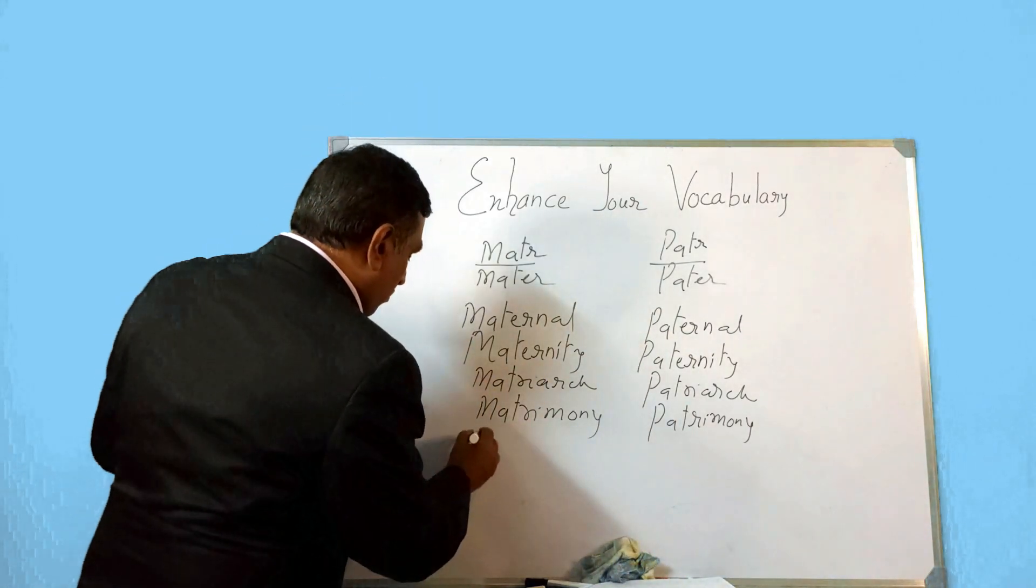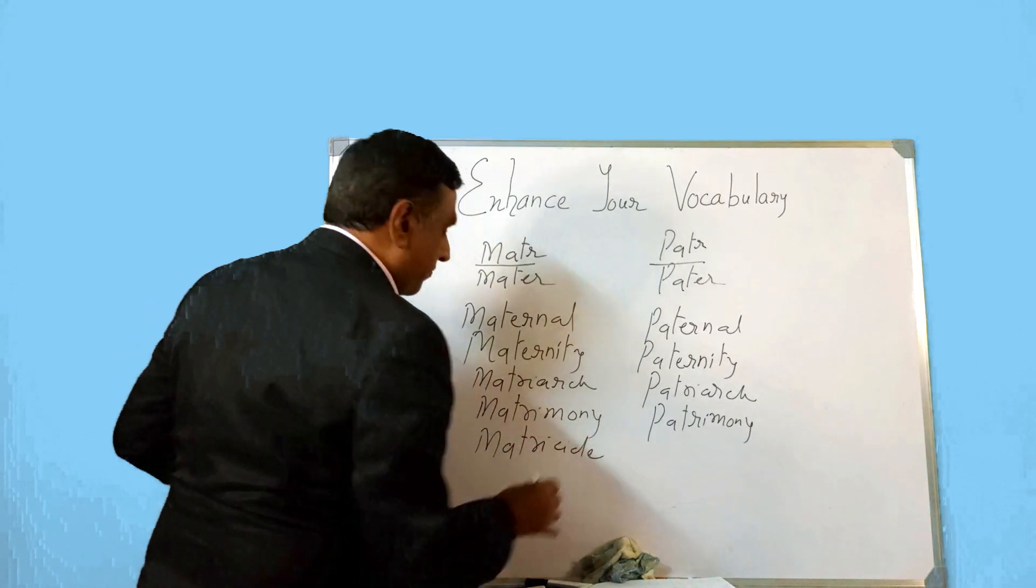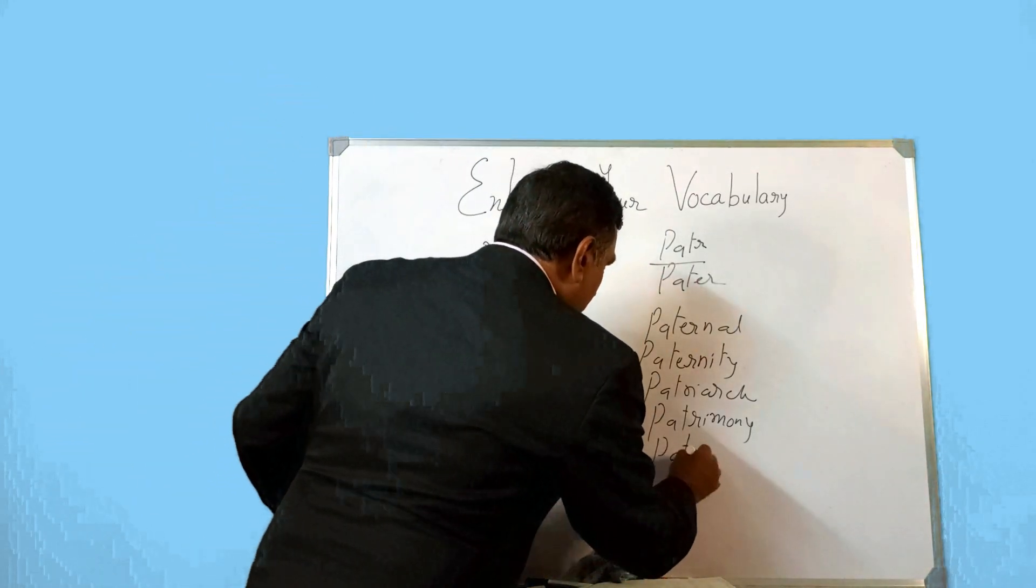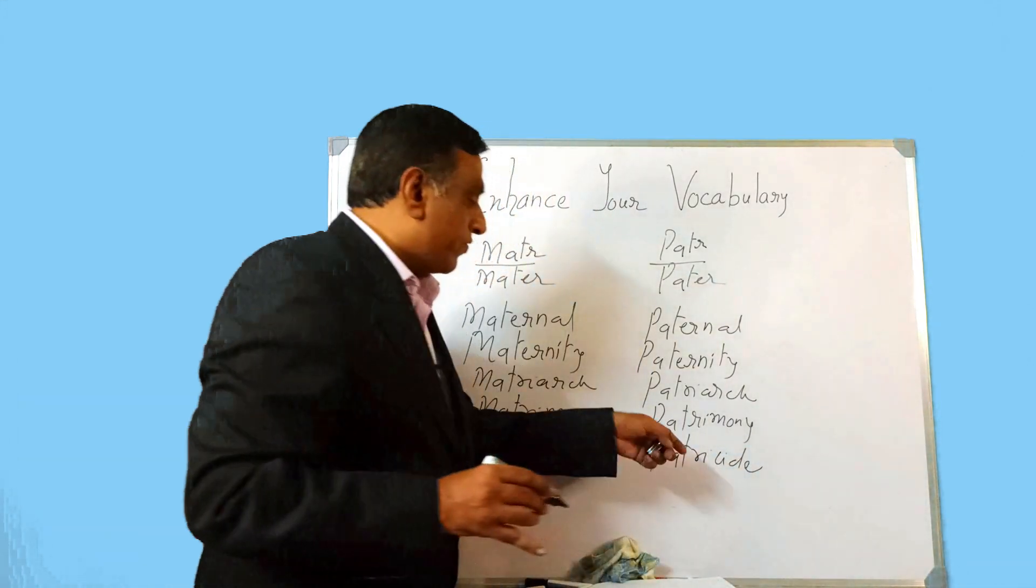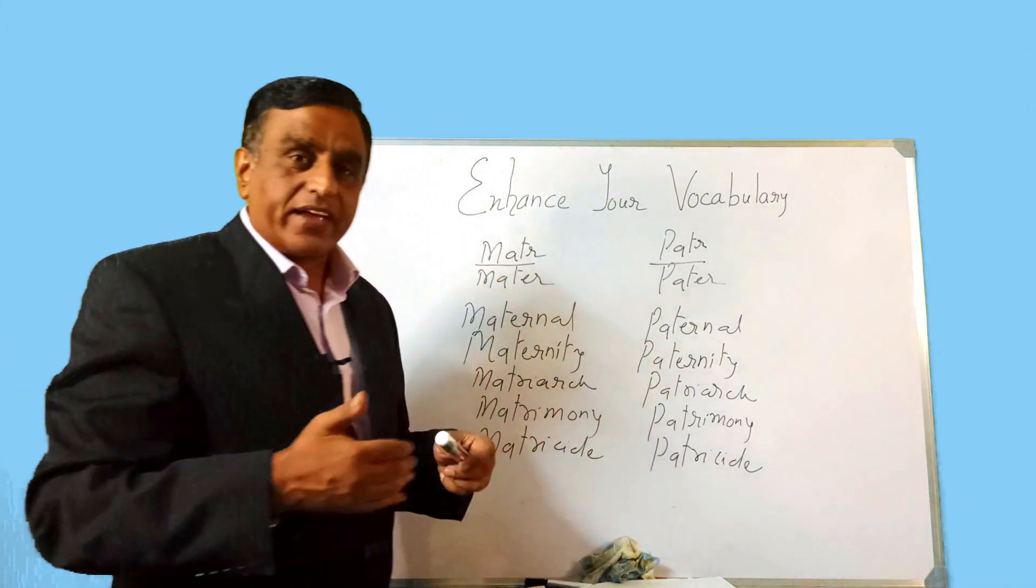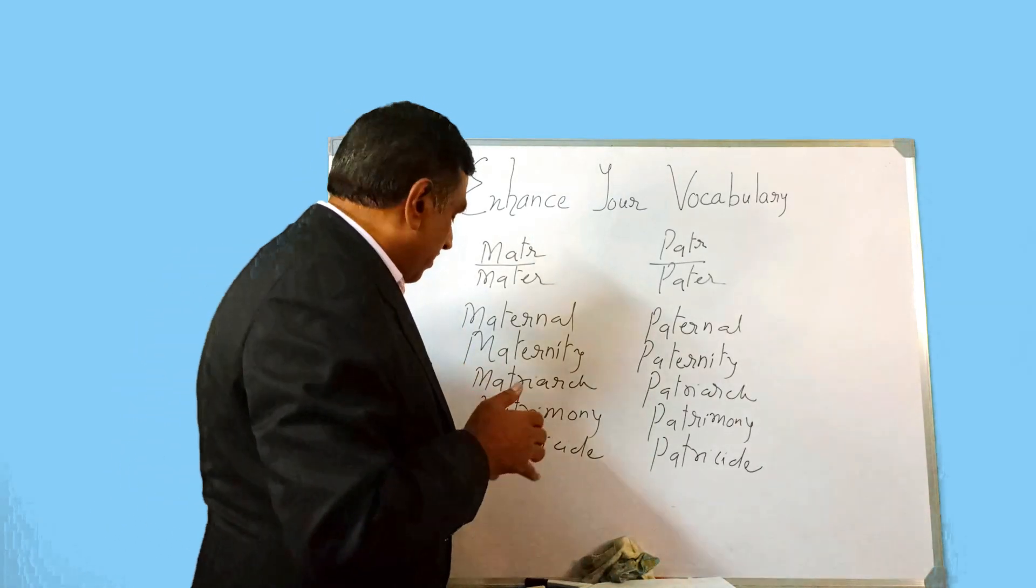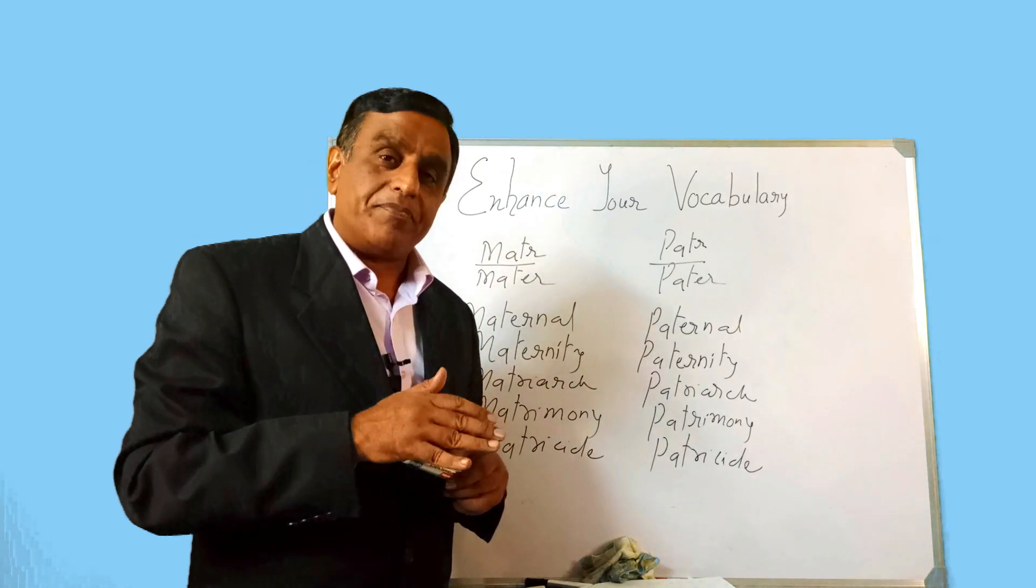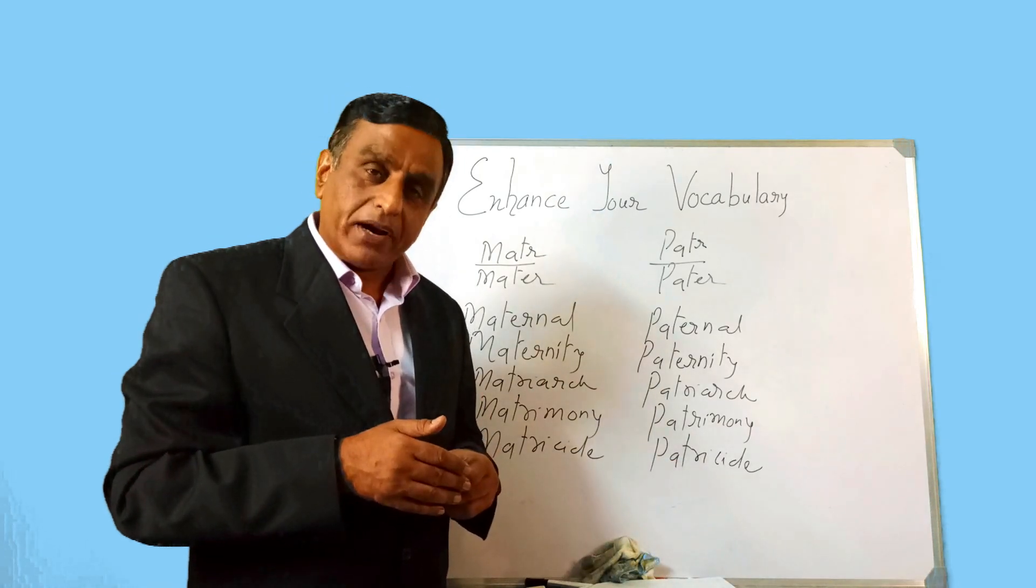Now that man was guilty of matricide and another man was guilty of patricide. Now side is kill. So you have word like suicide. A person killing one's own self will be suicide. Matricide, matri is mother, killing of one's own mother is matricide and killing of one's own father is patricide.